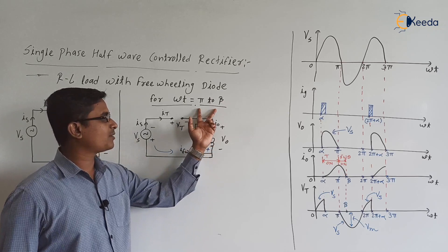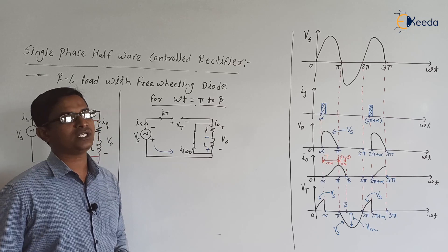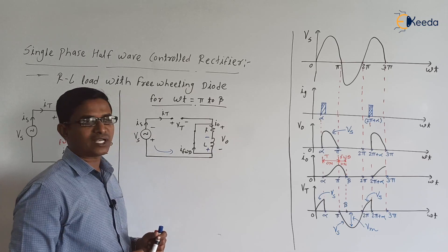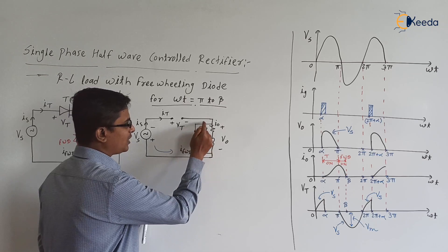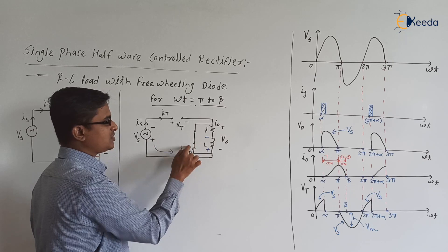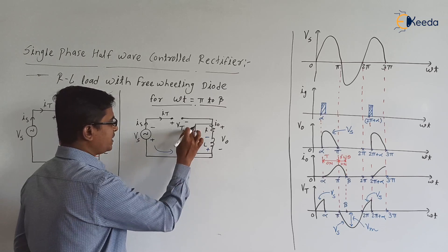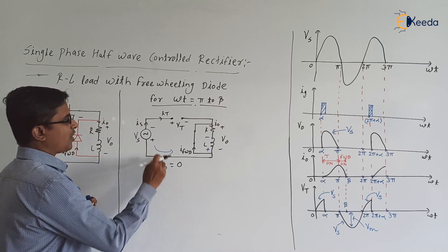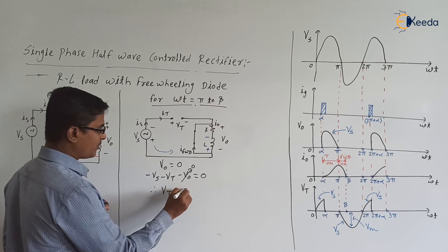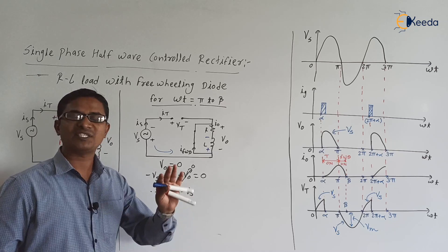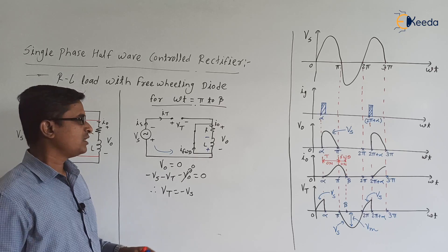After π, the inductor releases energy through the freewheeling diode, which turns on from π to β. When the freewheeling diode is on, the thyristor is reverse biased and goes to open circuit mode. The voltage across the load V0 equals the voltage across the conducting diode, which is 0 V. Applying KVL: −Vs − Vt − V0 = 0, and since V0 = 0, Vt = −Vs. So from π to β, Vt is the same magnitude as supply voltage but negative.